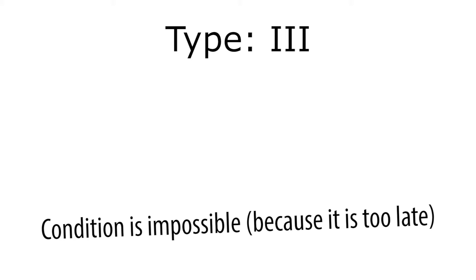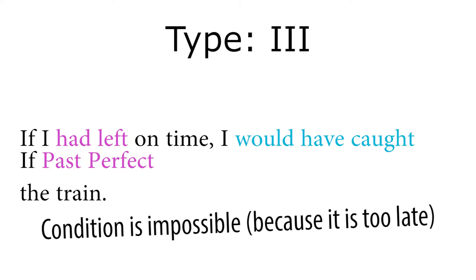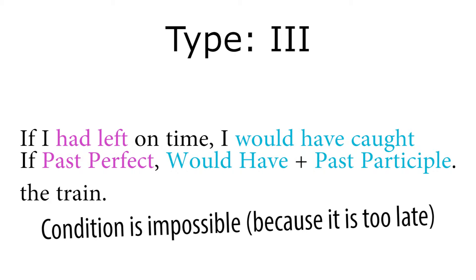Then there's the third type, which we use when something is not going to happen at all. In this case, we use the past perfect in the if-clause: 'If I had left on time, I would have caught that train.' So instead of 'will,' it now becomes 'would have,' followed by the past participle.